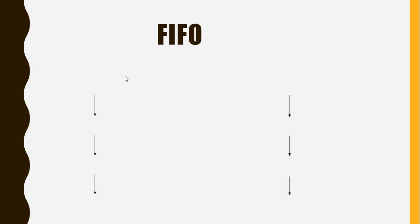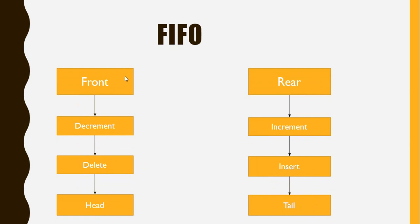First in, first out. The Queue works on first in, first out principle. The first value is nq — insert and delete. The front is the value to delete. To insert a value, we use the insert operation.